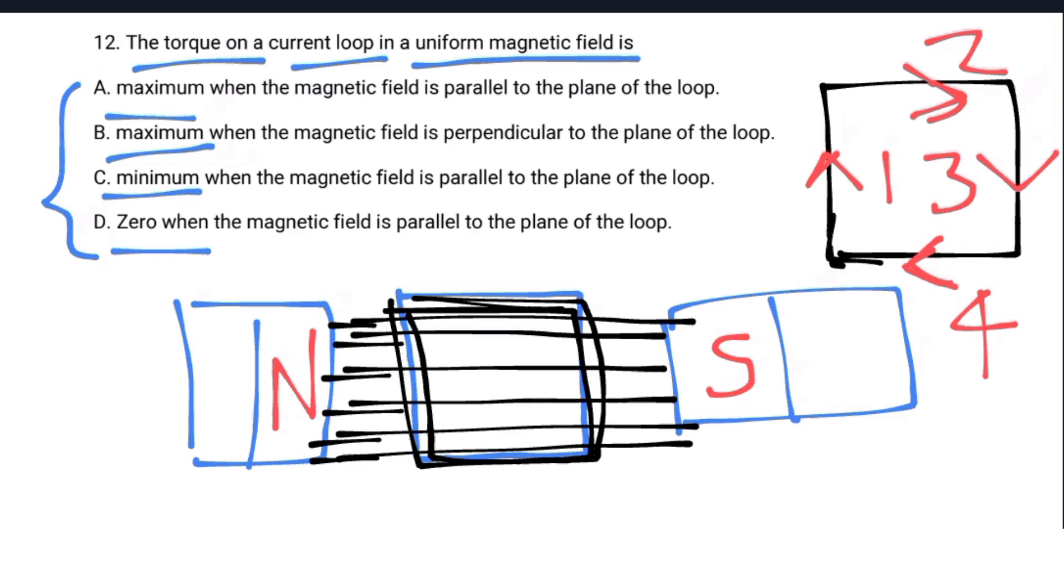When the current direction is perpendicular to the magnetic field, the loop experiences force. The force on one side is perpendicular to the current, creating rotation.